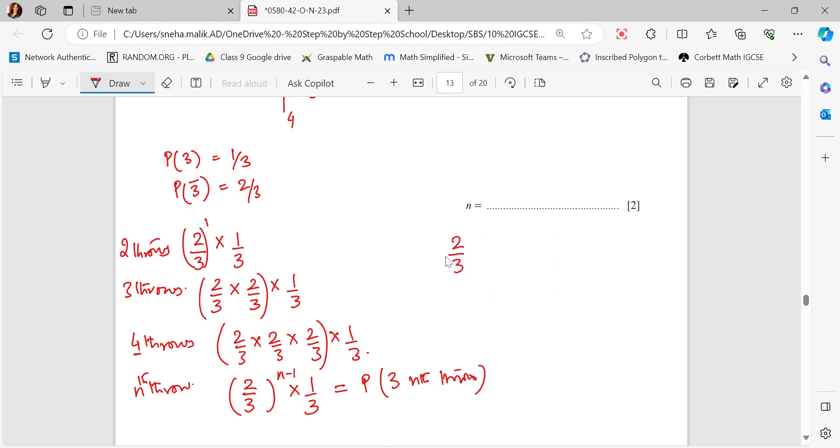I get 2 by 3 to the power n minus 1 into 1 by 3 is given to me as 32 upon 729. When I simplify this, I cancel this and this becomes 243. 2 by 3 to the power n minus 1 is 32 by 243. The exponential form, this is 2 by 3 times 5. So n minus 1 is 5, which implies n is 6. Hence the answer is 6.